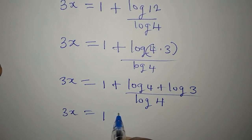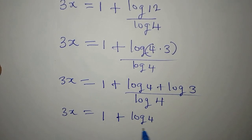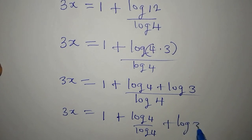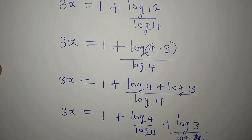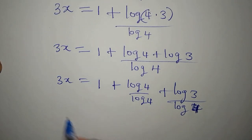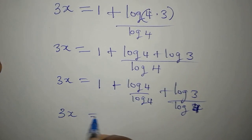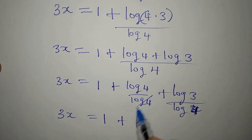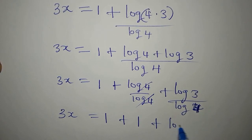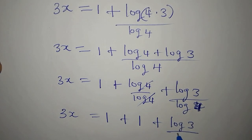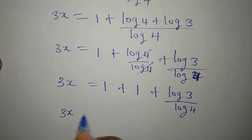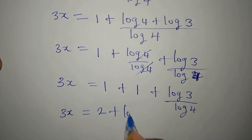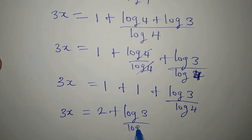Splitting the fraction gives log 4 over log 4 plus log 3 over log 4. The log 4 over log 4 cancels to 1, so our 3x is now equal to 1 plus 1 plus log 3 over log 4, which simplifies to 3x equals 2 plus log 3 over log 4.